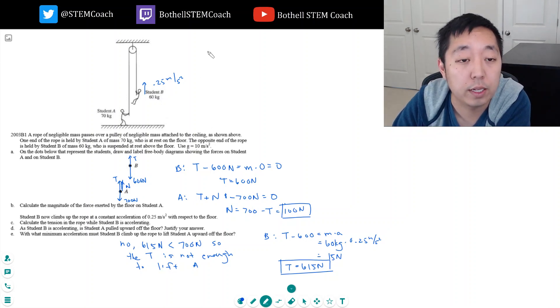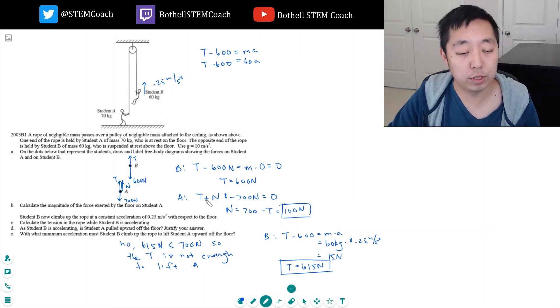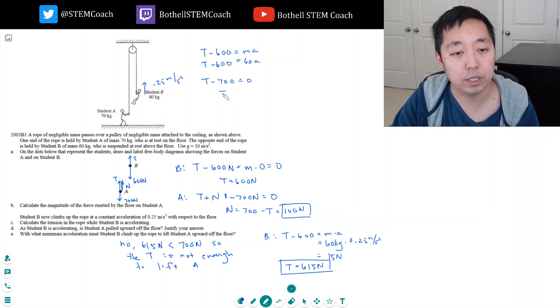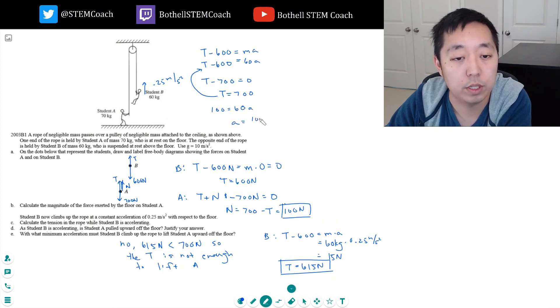So we're going to do these equations again. I'm going to have T for student B, T minus 600 is equal to M times A, which is 60 times A. This time I don't know what A is. Now for student A, what I want is for him to just barely be lifting. The normal force is zero. It's like just the tension balances his weight, so I want T minus 700 to be zero or T equal to 700. Plugging that into here, 100 equals 60 times A, and so A would be 100 over 60, which is 5 over 3, which is 1.6 meters per second squared.